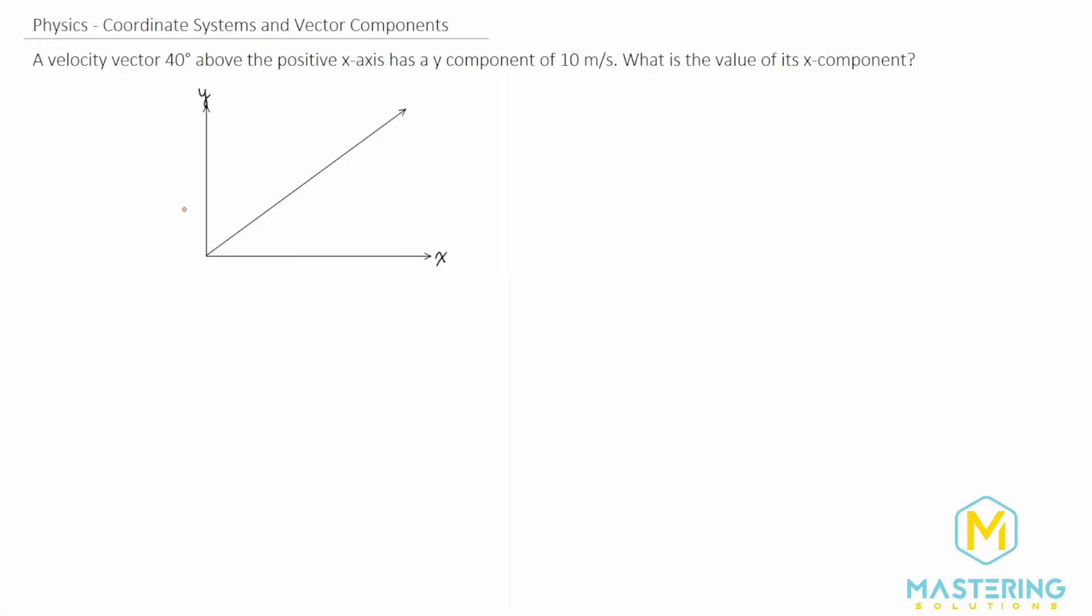Welcome to Mastering Solutions. This problem tells us that we have a velocity vector that's 40 degrees above the positive x-axis. So here's the positive x and I drew the vector already, and they say that it is 40 degrees above the positive x and they tell us that it has a y-component of 10 meters per second.